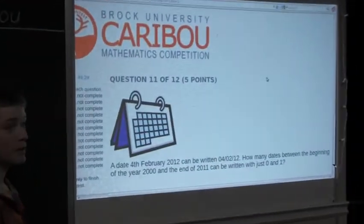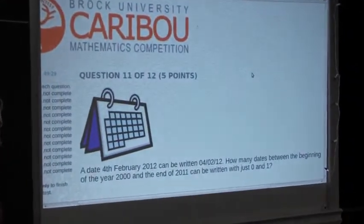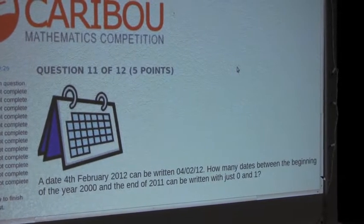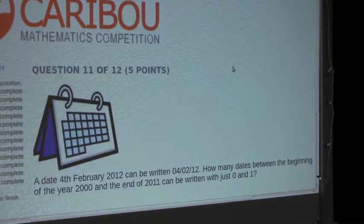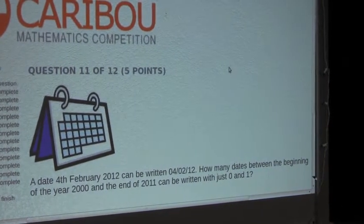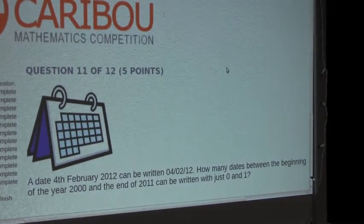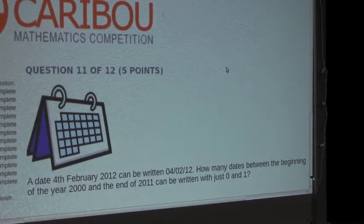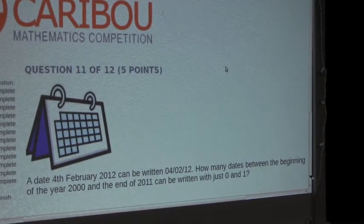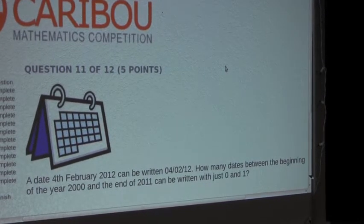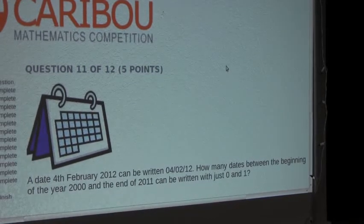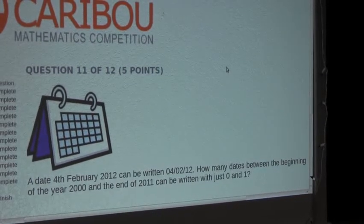The question is: a date like 4th February 2012 can be written 04-02-12. How many dates between the beginning of the year 2000 and the end of 2011 can be written with just 0 and 1?